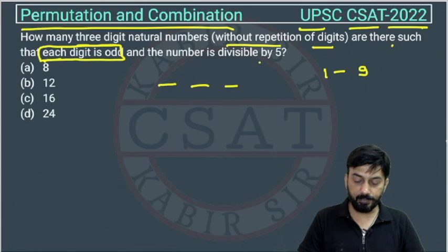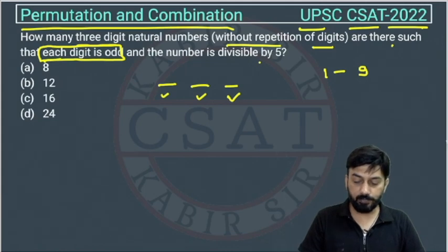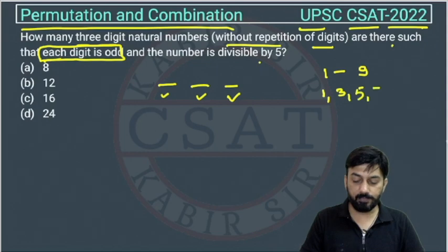We consider only odd digits: 1, 3, 5, 7, and 9. Out of one to nine, the odd digits are only these.